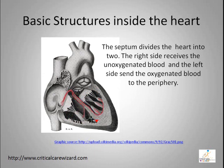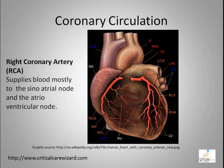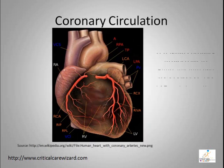The septum divides the heart into two. The right receives the unoxygenated blood, and the left side sends the oxygenated blood to the periphery. Most of the right ventricle muscles get their perfusion from the right coronary artery. The right coronary artery, or RCA, supplies blood mostly to the sinoatrial node and the atrioventricular node.